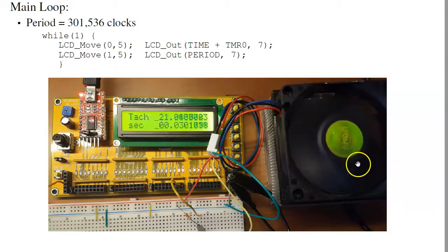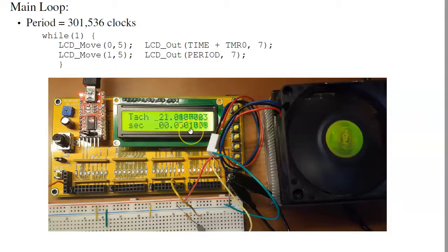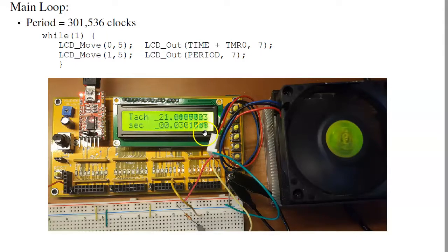I've got the motor spinning and it produces a square wave. The time between edges is about 30,031-something clocks, so I've got the period with a resolution of 1 part in 300,000. This is actually a very accurate measurement of the period. The reason it's fluctuating is the encoder isn't exactly perfect — as the teeth go by, sometimes the timing varies.